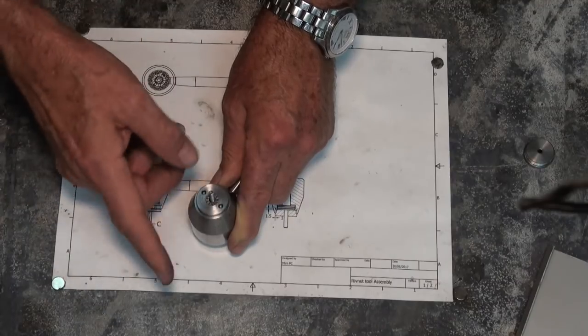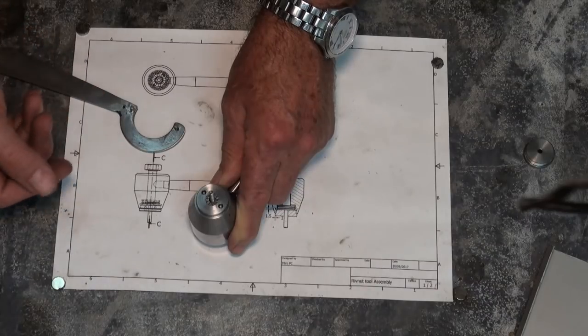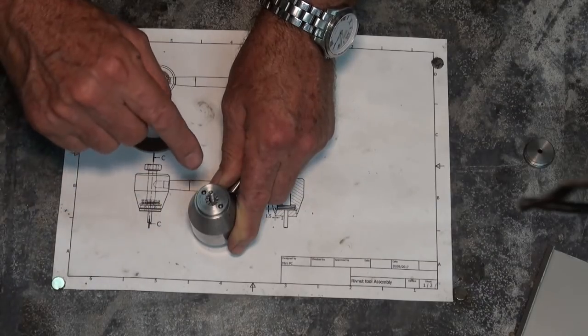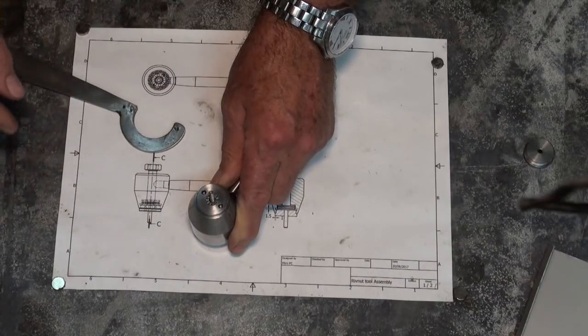Now I didn't make this tool, the rib nut tool, on camera. It was just something that I made up on the spur of the moment. But the next tool, the pin wrench, I'm going to do on camera to show you how that's done.